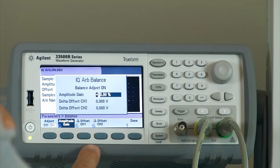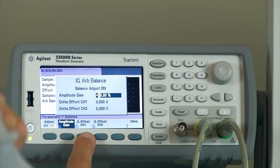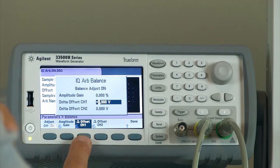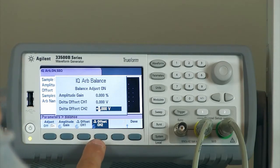Here's the IQ balance adjustment menu, and as you can see I can adjust the amplitude gain, I can adjust the offset of channel 1, and also the amplitude offset of channel 2.